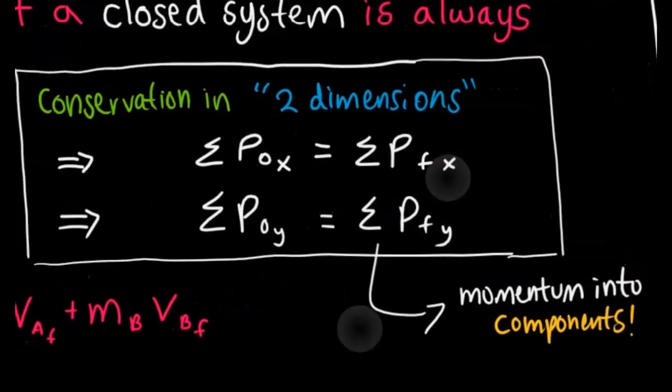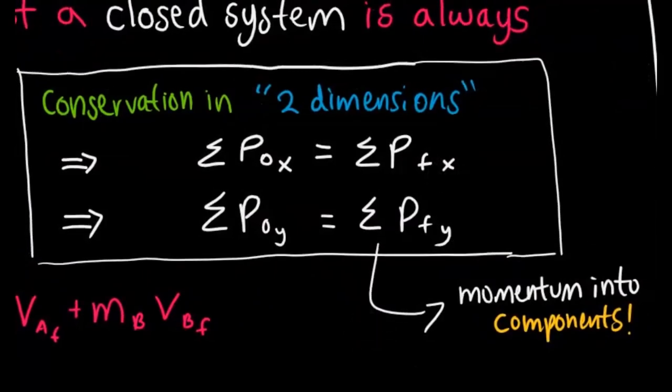Sometimes momentum is not always conserved in both directions, so you want to break up momentum into its components like we've seen in the other units. Just because momentum might be conserved in the X direction doesn't necessarily mean it's conserved in the Y direction.